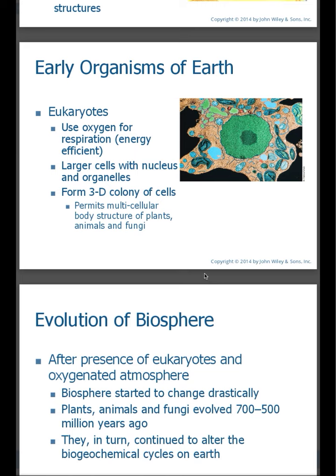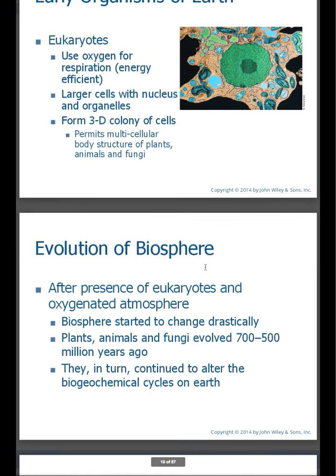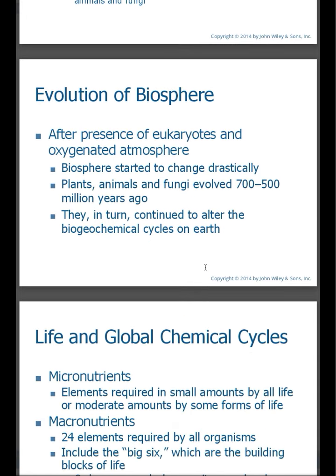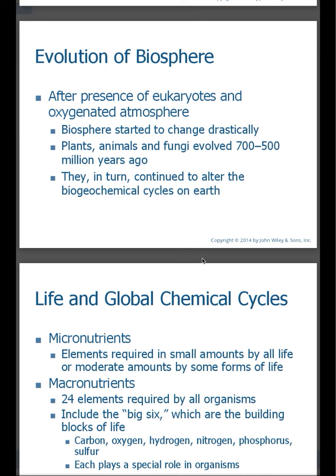The eukaryotes began to make use of oxygen to help produce energy. After the presence of eukaryotes and an oxygenated atmosphere, we began to see tremendous changes. We began to see plants and animals come on the scene about 700 to 500 million years ago. These more robust, higher order type of organisms began to have an impact on their environment.